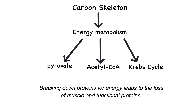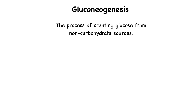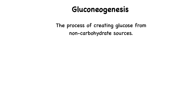One of the most important metabolic pathways involving amino acids is gluconeogenesis, the process of creating glucose from non-carbohydrate sources. When carbohydrates are scarce, the liver converts amino acids into glucose, ensuring that critical organs like the brain and red blood cells have a steady energy supply. This is why low-carb diets or prolonged fasting often lead to muscle breakdown — your body taps into muscle proteins as a backup glucose source.